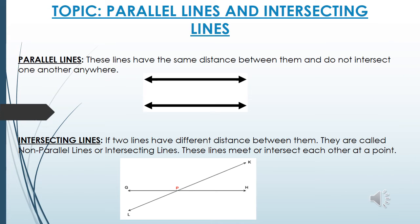Now, next topic: parallel lines and intersecting lines. Parallel lines - these lines have the same distance between them and do not intersect one another anywhere.